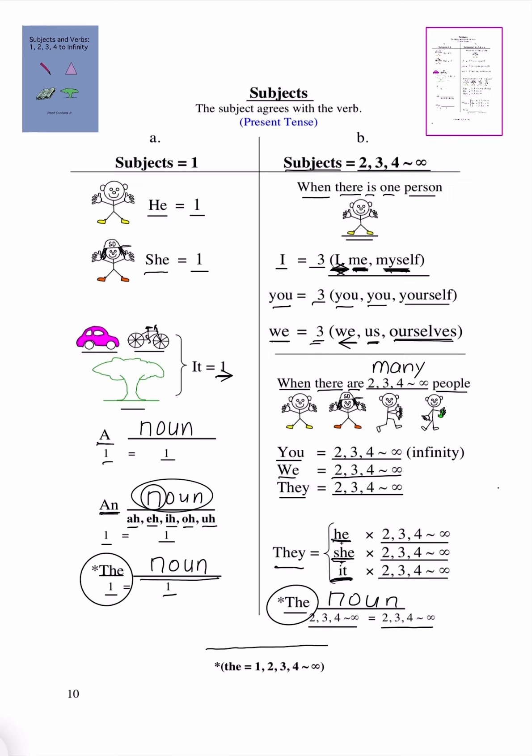So, here, the is going to equal 1, 2, 3, 4 to infinity. And the reason this is, is because the can be used with a singular noun. And the could be used with a plural noun.